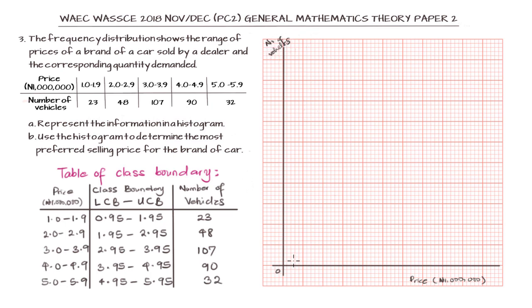With this now, we can say we want to go ahead to obtain our histogram. Having the axes as the number of vehicles against the price, we are going to be plotting with the class boundary. We need to put in the values for the class boundaries and then the number of vehicles on the vertical axis.